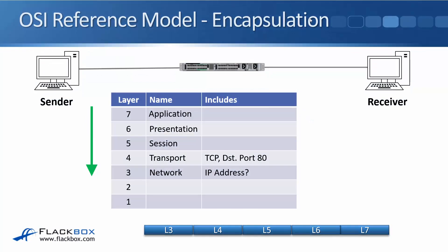We're now looking at the web packet that host A was holding. It had been able to compose it as far as layer 4, but it couldn't put the layer 3 IP header on there because it didn't know the destination IP address yet. It's just received that from the DNS server, so it can carry on composing that packet.